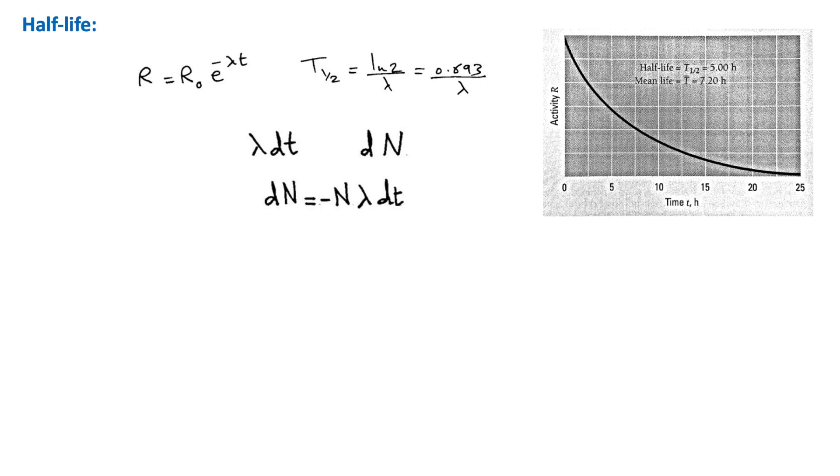Suppose that a sample contains n undecayed nuclei, then the number dn that decay in a time interval of dt is the product of the number of nuclei n, and the probability lambda dt that each will decay in a time interval of dt. So dn equals minus n lambda dt, and the minus sign is because n decreases with increasing t.